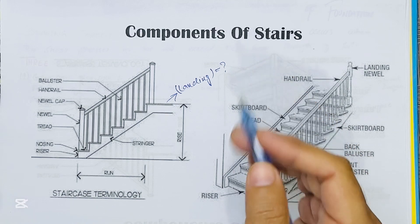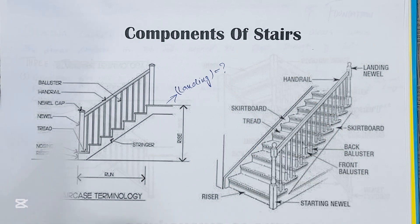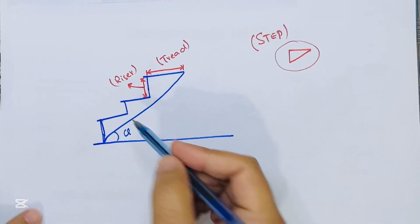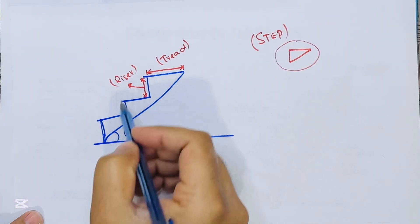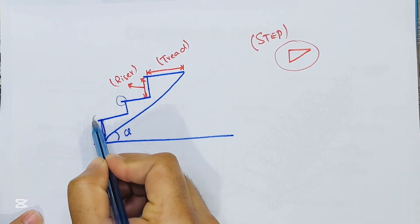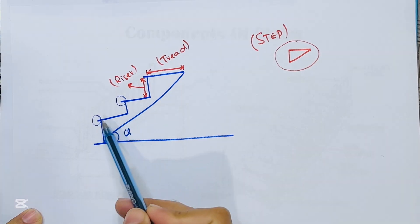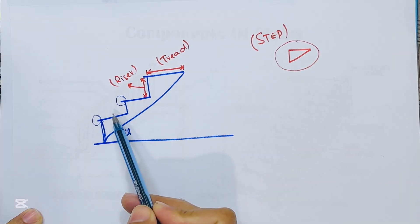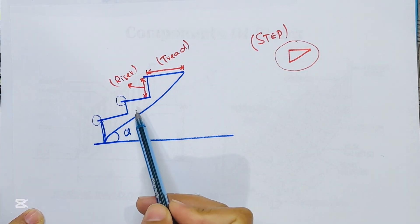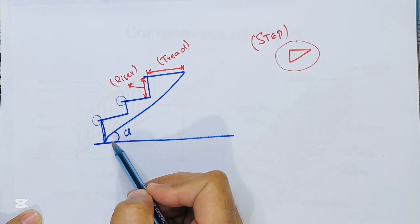In this diagram you can see this is nosing. Nosing is the projecting part of the tread beyond the face of the riser, and nosing is usually rounded.